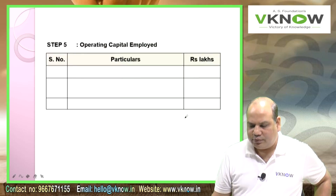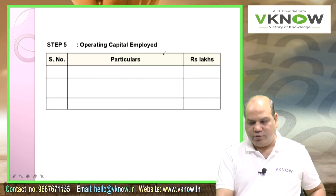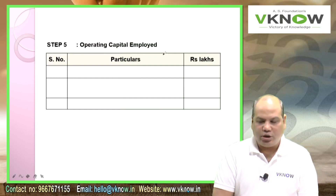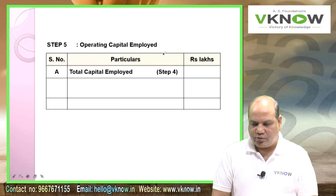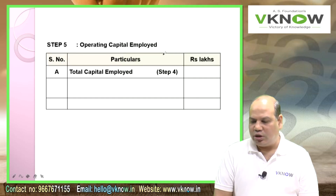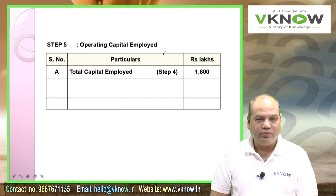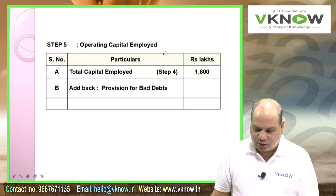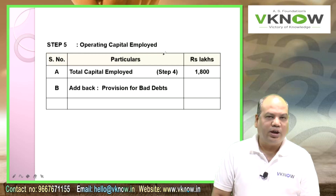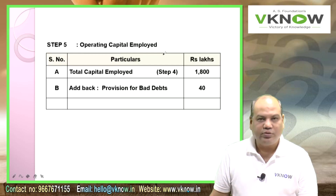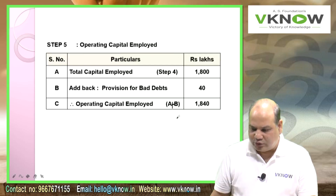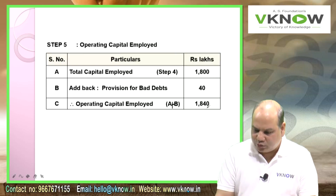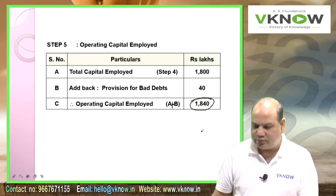Step 5: Operating capital employed. Total capital employed as per step 4 is 1800. Add back provision for bad debt: 40. Operating capital employed (A plus B) is 1840. This figure of 1840 will be used when calculating EVA.